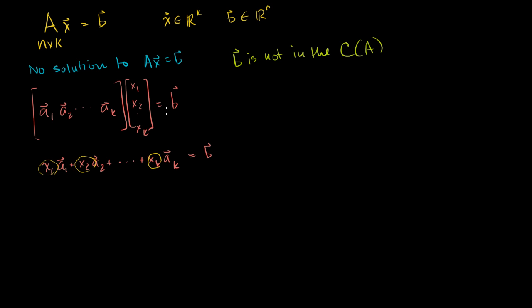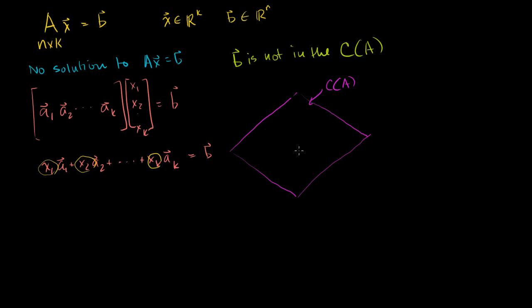Let's visualize it. The column space of A might look something like this — say a plane in R^n. If b is not in the column space, maybe b pops out right there, clearly not in this plane. Up until now, we would make an augmented matrix, put it in reduced row echelon form, and get a line that says 0 equals 1, and conclude there's no solution — nothing we can do.